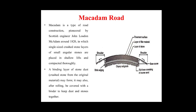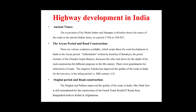Now we shall discuss highway development in India. In ancient times, excavations of the Mohenjo-Daro and Harappa civilizations show traces of roads dating back to the period of 3500 to 2500 BC, followed by the Aryan period of road construction. In the Aryan period, various scriptures are available about road development in India. The Arthashastra, written by Kautilya Chanakya, the Prime Minister of Chandragupta Maurya, discusses rules laid for the depth of road construction for different purposes, dating back to the 4th century BC.